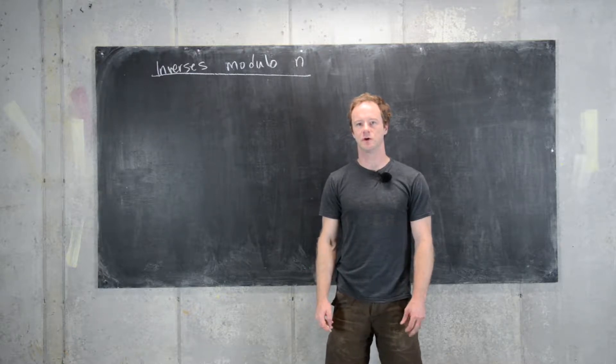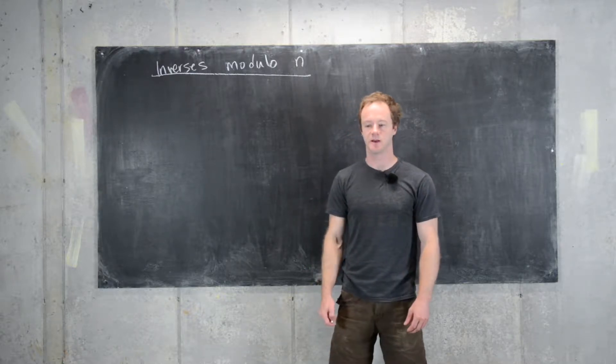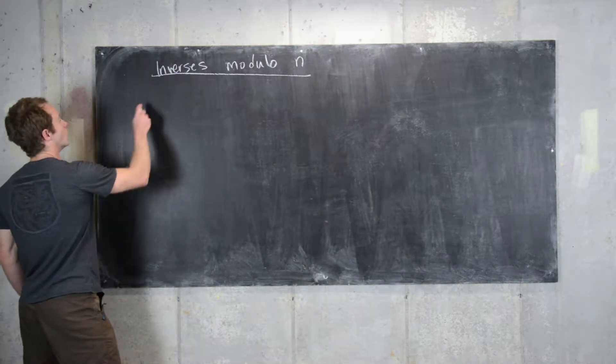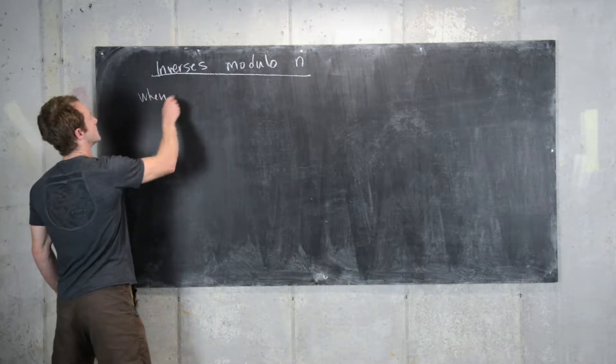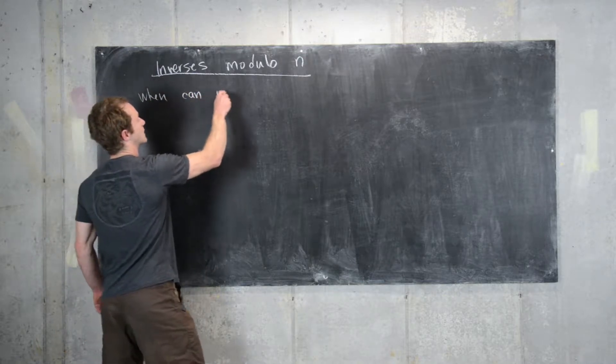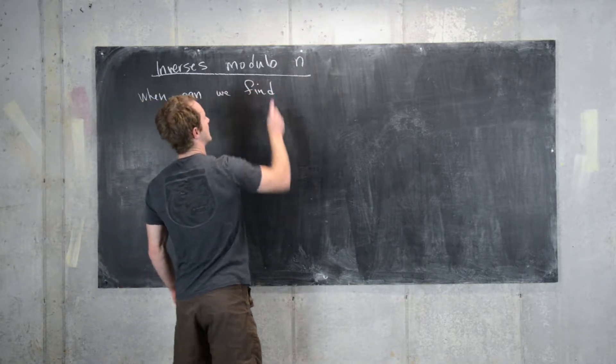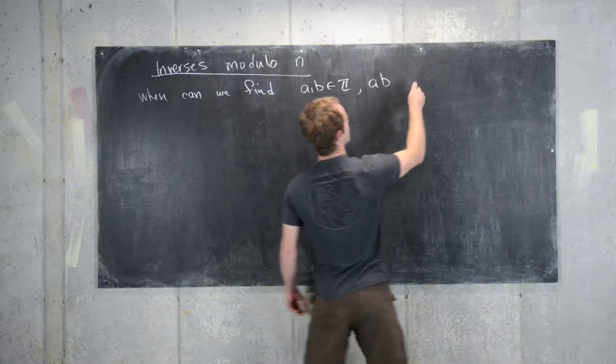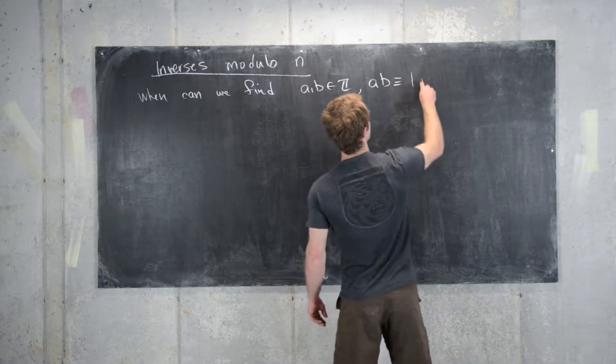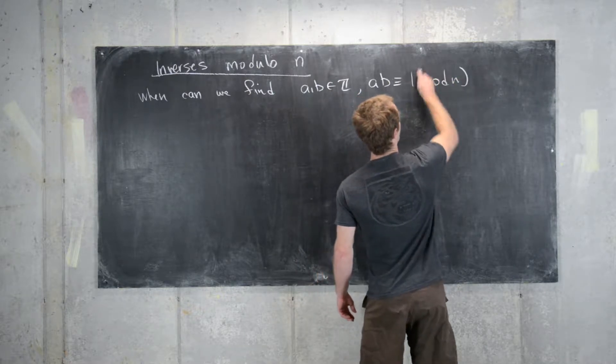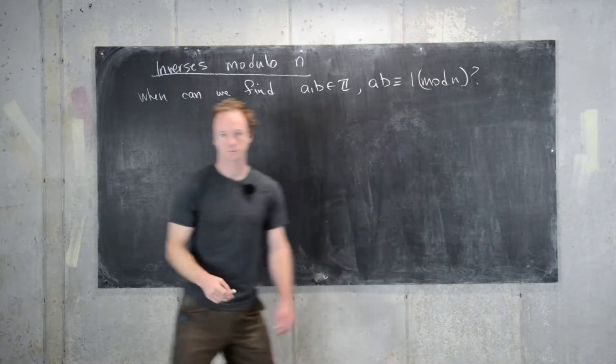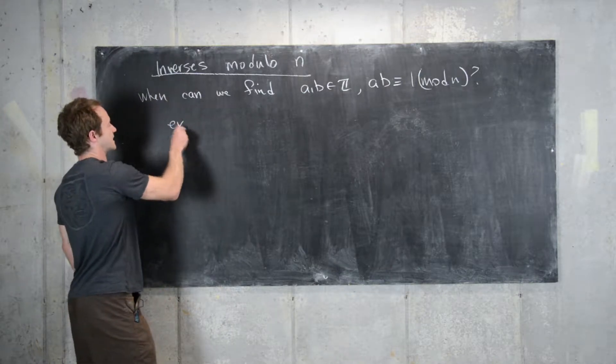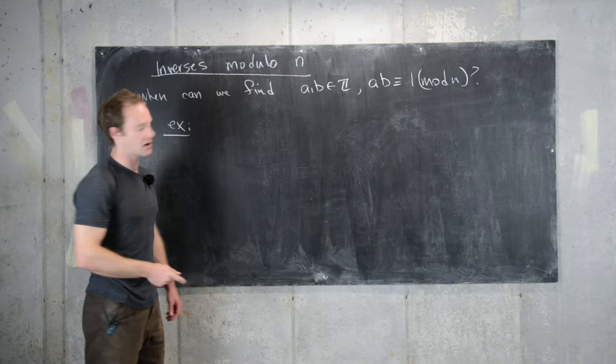Okay, in this video we're going to look at the notion of multiplicative inverses modulo n. And so by that I mean, when can we find inverse pairs so that when we multiply them, we get 1 mod n.